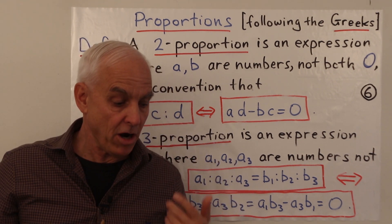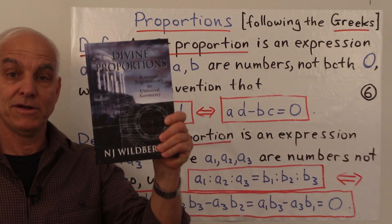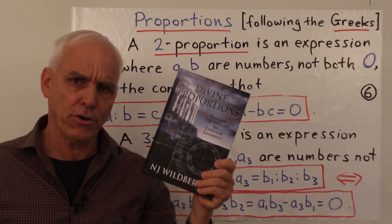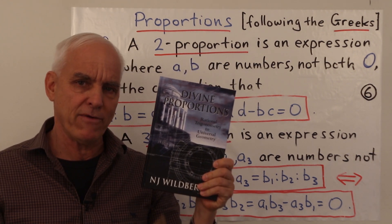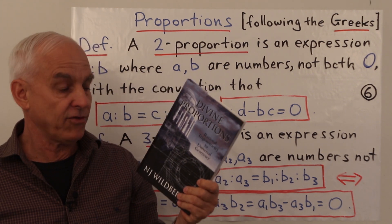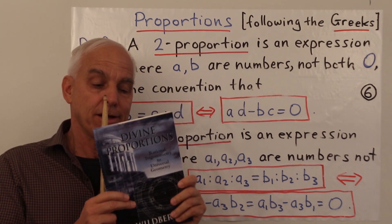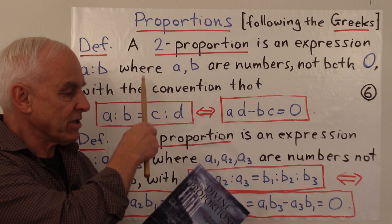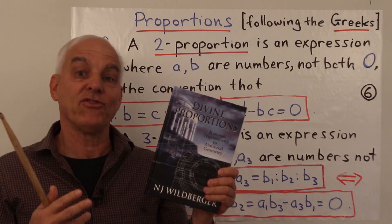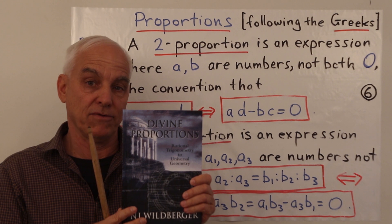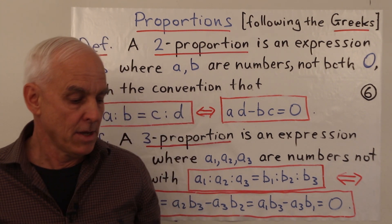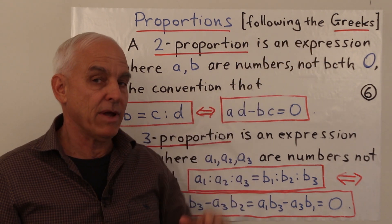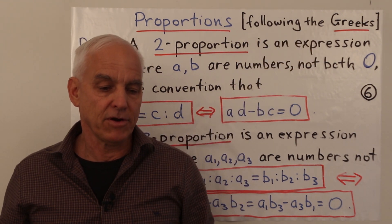Proportions are kind of close to my heart because I wrote a book called Divine Proportions — my book on rational trigonometry. The notion of proportion encoded here plays a central role in setting up this entire new theory of trigonometry. So it's quite a useful thing — even though it goes back to antiquity, we'll see that it's very useful for us.